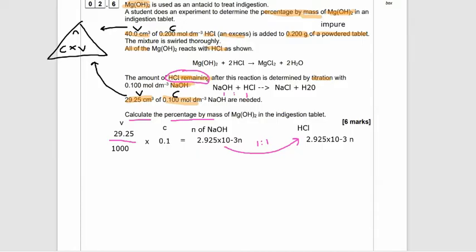So now what we want to do, as we have the remaining HCl, we want to work out what the original amount of HCl was that originally reacted with the powder tablet. We need to find the original. 40 cm³, which is the volume. Turn it into dm³, so we need to divide by 1,000 again. And then multiply by 0.2 mol/dm³. And that should give us 8 × 10⁻³, or you could call it 0.008. And that is the moles of the original hydrochloric acid that we reacted with the indigestion tablet containing the magnesium hydroxide.